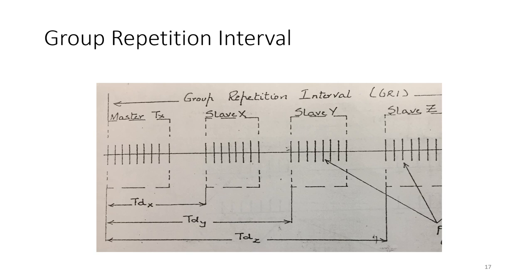For operational purposes, each station transmits not just one pulse but a group: the master transmits nine pulses and each slave transmits eight. The ninth pulse of the master is spaced approximately 2000 microseconds after the eighth pulse. It serves two purposes: it helps identify the master signal, and it is made to blink if there are transmission errors from one or more stations in the chain, alerting the receiver. The ninth pulse is not used for navigation. The master signal comprises nine pulses each of about 200 microseconds duration, with the first eight at 1000-microsecond intervals and the ninth at 2000 microseconds.